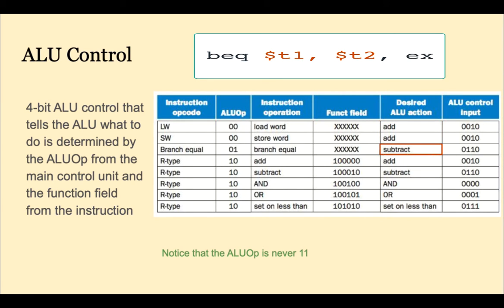For a branch equal, it's subtract. It needs to subtract the two operands to see if they're equal.